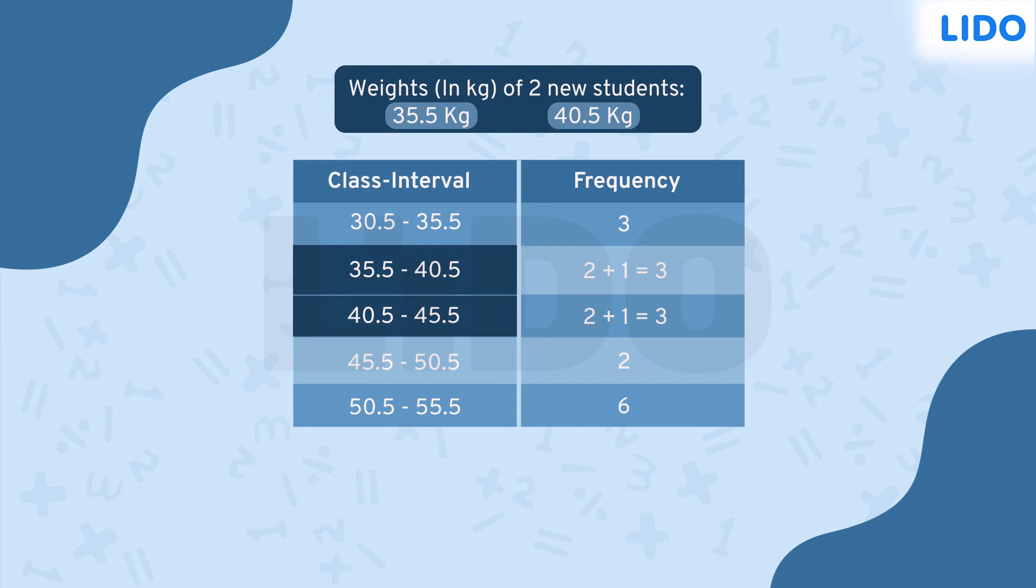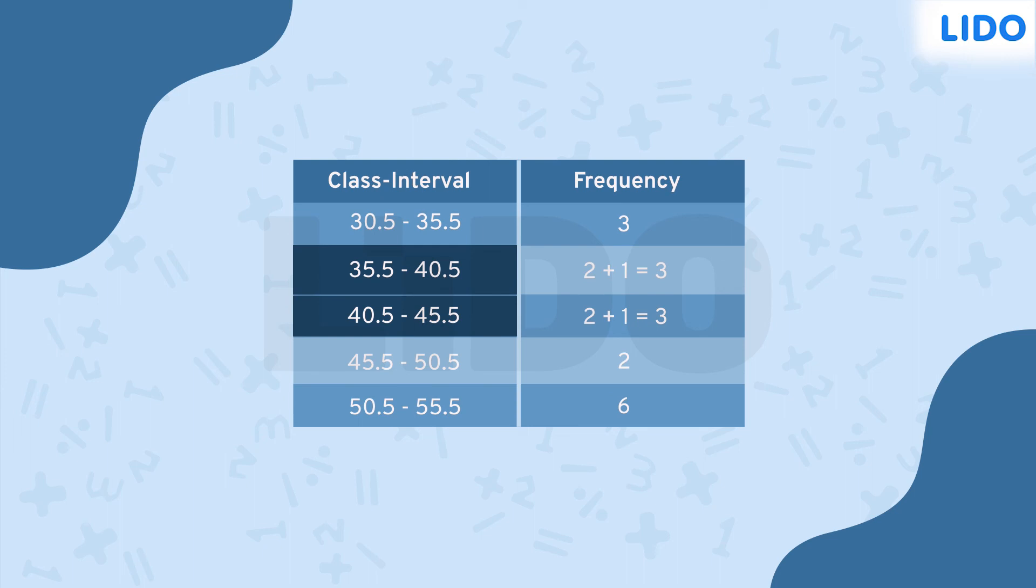Now that we have included the weights of Rahul and Sonia, the table represents the entire class. This makes the new students happy as they feel included.